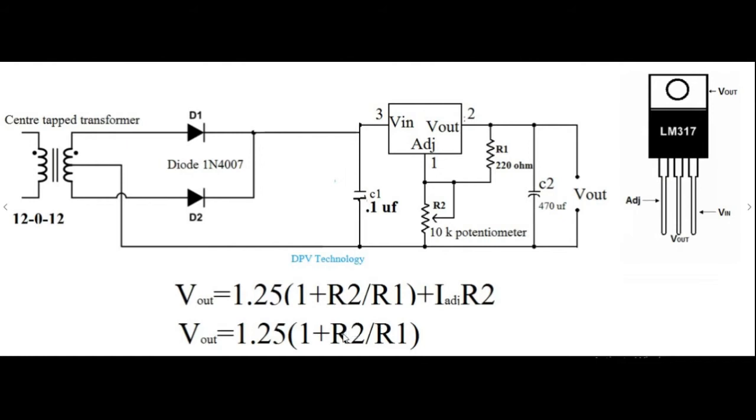So here at the output we are also using a capacitor of 470 microfarad to increase the transient response of the circuit. You can use any capacitance value in between 1 microfarad to 1000 microfarad.